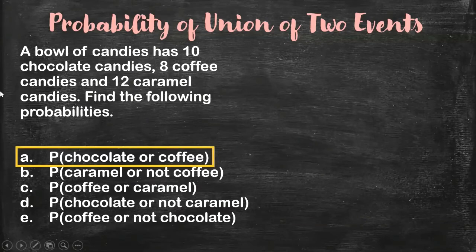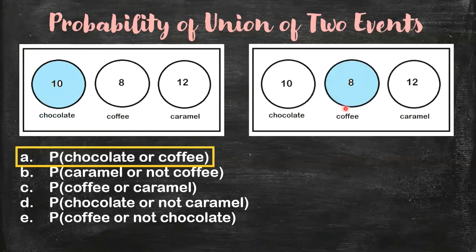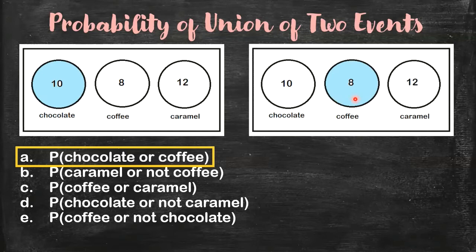First, we get the probability of getting a chocolate candy or a coffee candy. By Venn diagram, this represents the set of chocolate candies, and this one represents the set of coffee candies. As you can see, they have no intersection. So to get the probability of chocolate or coffee, all you have to do is count the number of chocolate candies and the number of coffee candies, add them — you get 18 — then divide by the total number of candies, so over 30. You have 18 over 30. You get its simplest form: 18 divided by 6 is 3, and 30 divided by 6 is 5. So the answer is three-fifths.